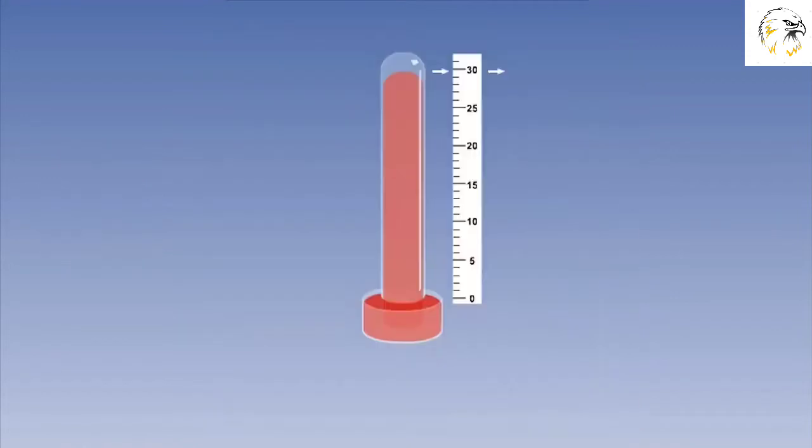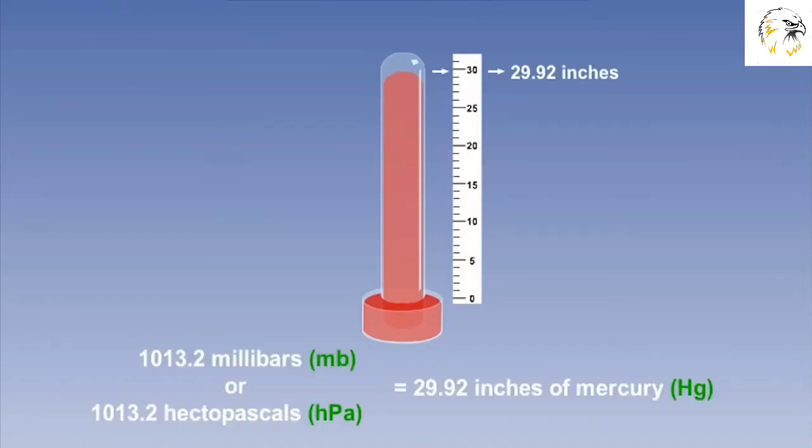Going back to the mercury barometer, once calibrated, the average sea level pressure will displace the mercury from the level in the reservoir by 29.92 inches. The United States usually use inches for measuring pressure. However, elsewhere, it is more common to use the millibar, or hectopascal, to measure atmospheric pressure. This uses a different scale, but for comparison, 1,013.2 hectopascals is equivalent to 29.92 inches of mercury.